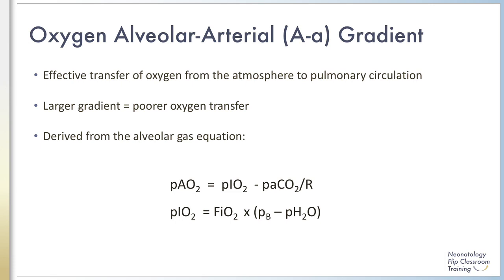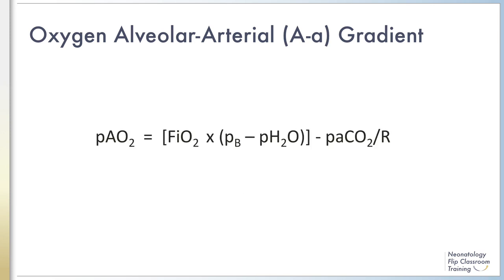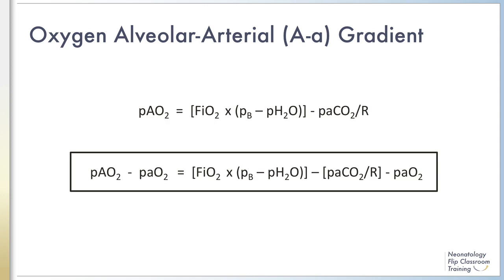If you are not at sea level, you should be provided with the atmospheric pressure at the different elevation. If you substitute the equation for PiO2 into the alveolar gas equation, you obtain this equation. If you subtract the partial pressure of arterial oxygen, or PaO2, from either side, you will have the final alveolar-arterial gradient equation.